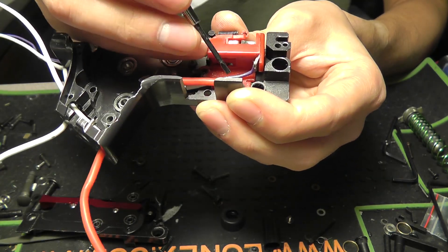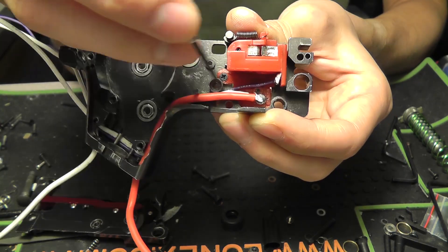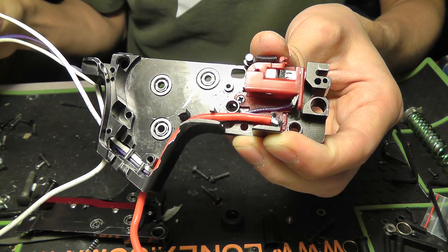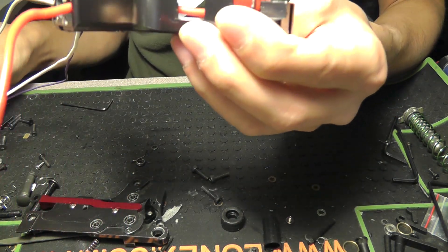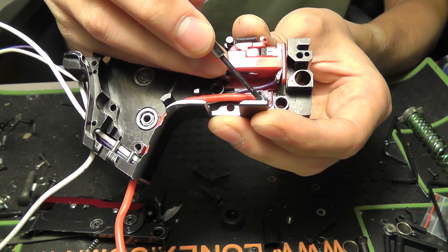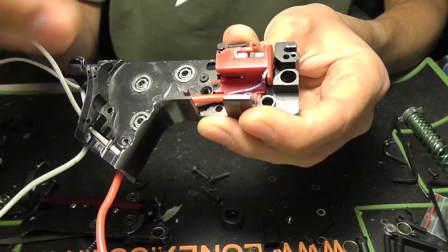There's another wire that gets soldered on top of that which is the positive wire that goes to the motor. So you have two wires soldered onto the bottom. It's going to be the positive wire to the trigger contacts coming from the MOSFET and the positive wire coming from the motor to the contacts.